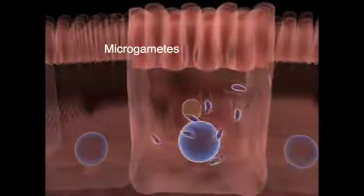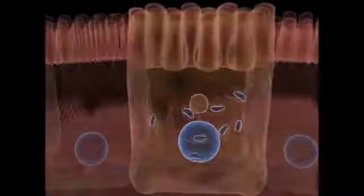Fertilization occurs when the microgamete fuses with a female macrogamete. Each macrogamete is differentiated from a single merozoite.